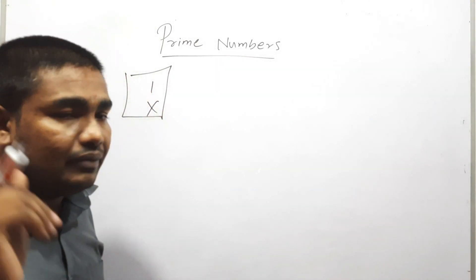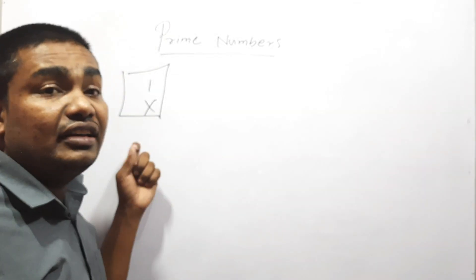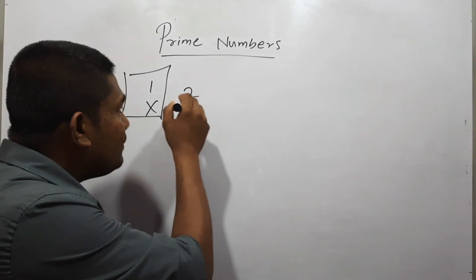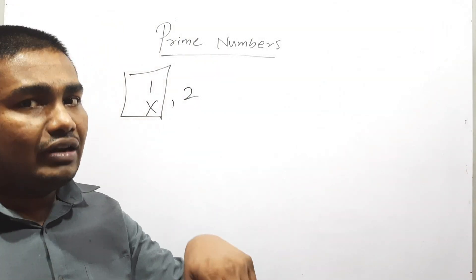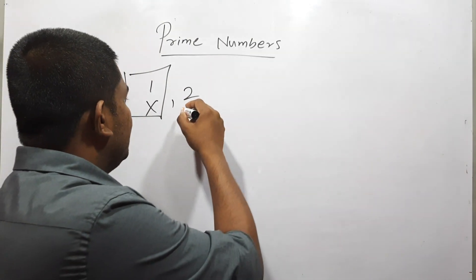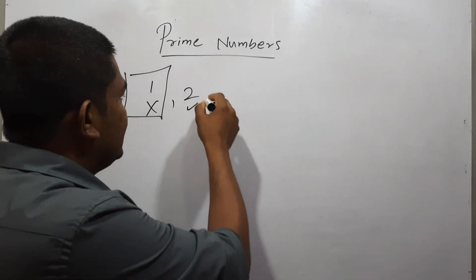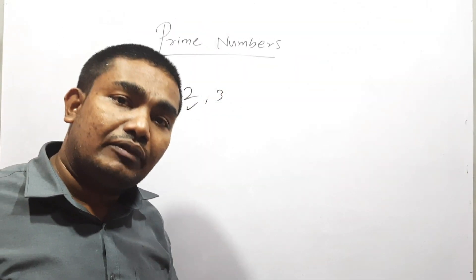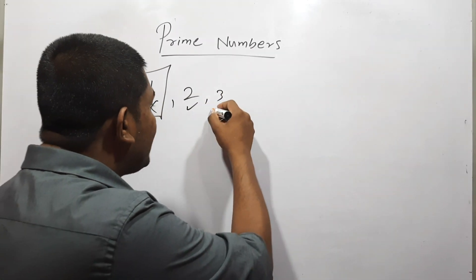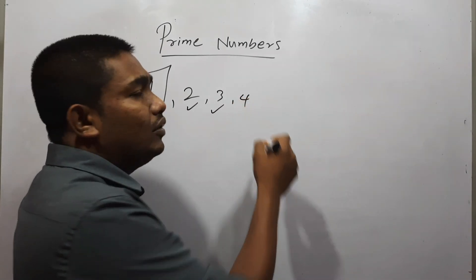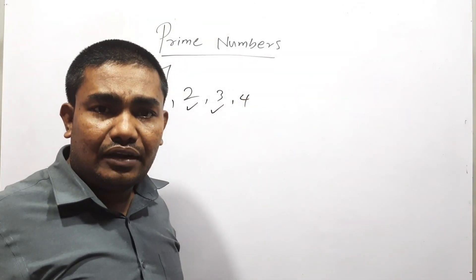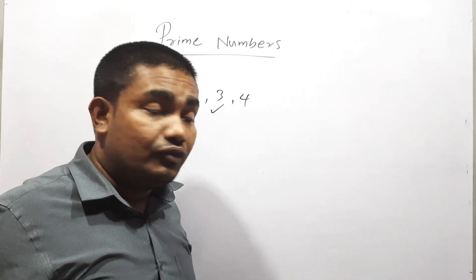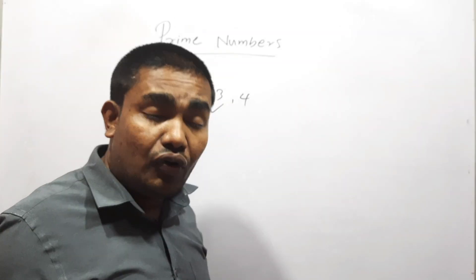Don't forget this — 1 is never a prime number. 2 is a prime number; we can divide 2 by 2 and 1, therefore 2 is a prime number. Is 3 a prime number? Yes — we can divide by 3 and 1 only, there are 2 factors, therefore 3 is a prime number. Can we divide 4? We can divide 4 by 4, 2 and 1.